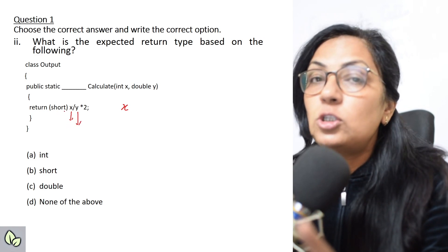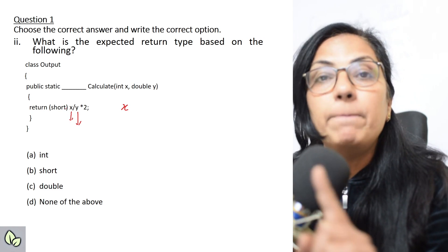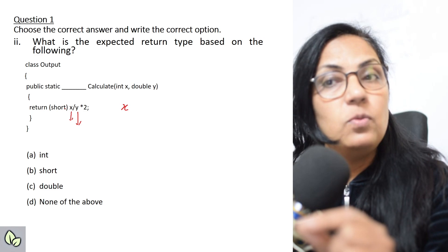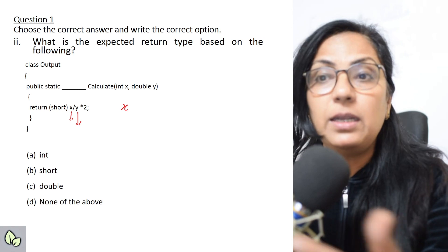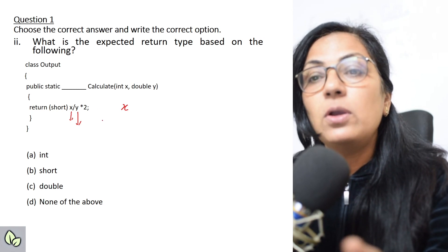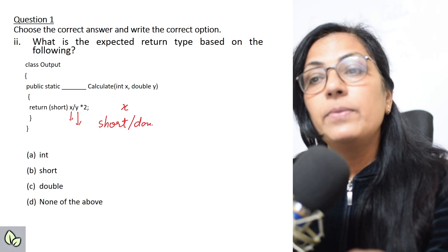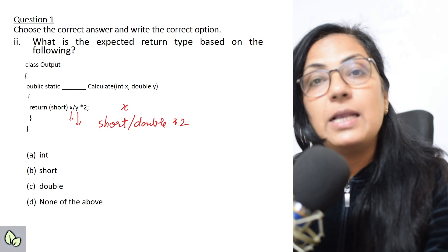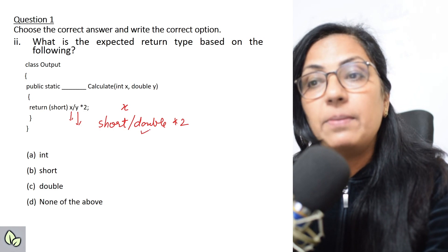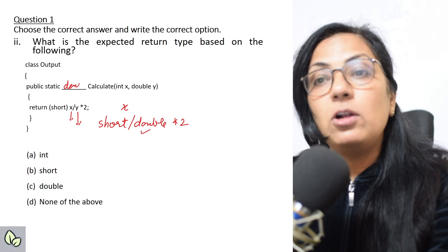Now short is written here. This is explicit conversion, but this conversion is being done to x only. So here it will be short slash double and multiplied by 2. 2 is int type, and short slash double, the higher data type is double, so the return type will be double, not short.